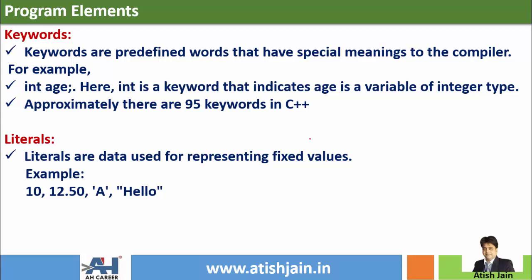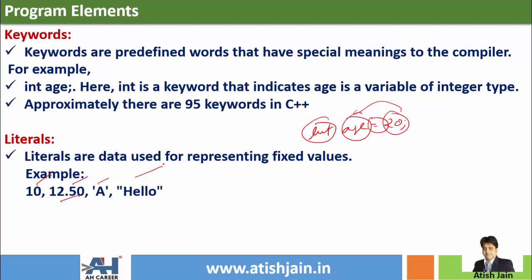Literals represent fixed values in a program. For example, integer A equals to 20 — integer is the data type, A is the variable, equal to is the assignment operator, and 20 is the literal. This is a numeric literal. 12.50 is a float literal, or we can say real literal. 'A' is a character literal. So, a literal is nothing but any data item that is used to assign values to variables in a program.